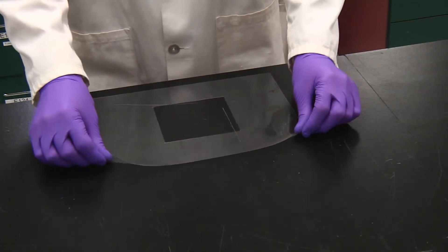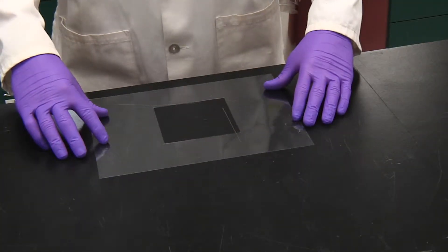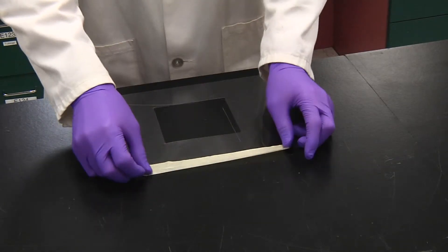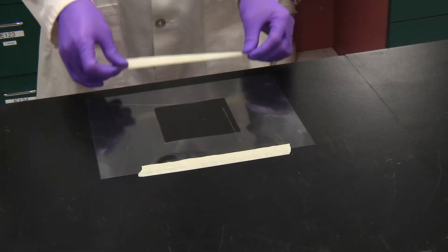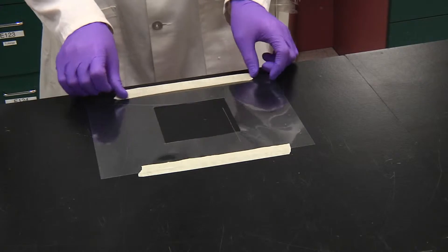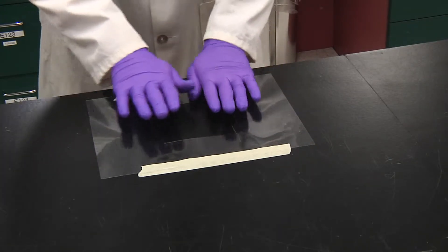When you've identified the surface to be sampled, place the sampling template on the surface and secure with tape. Make sure the template's secure and won't slip while you're sampling.